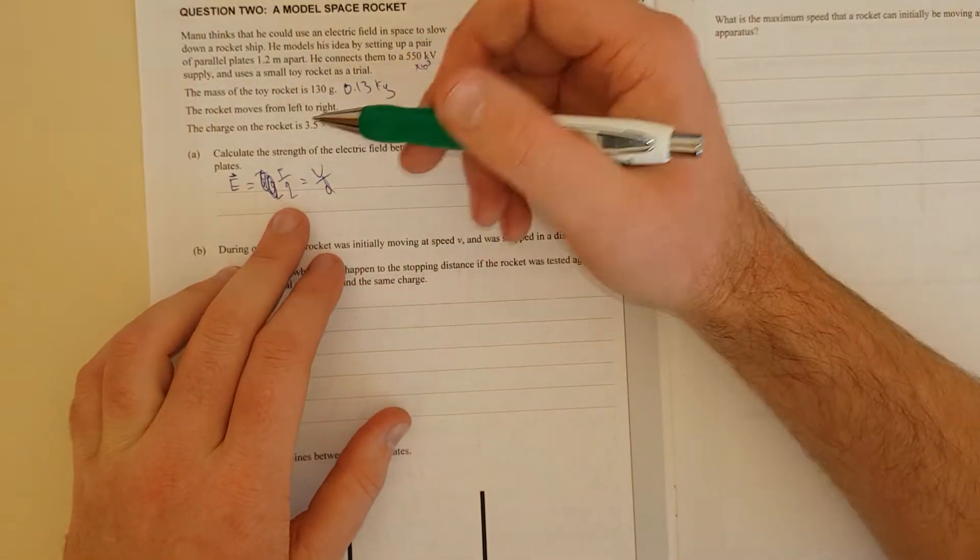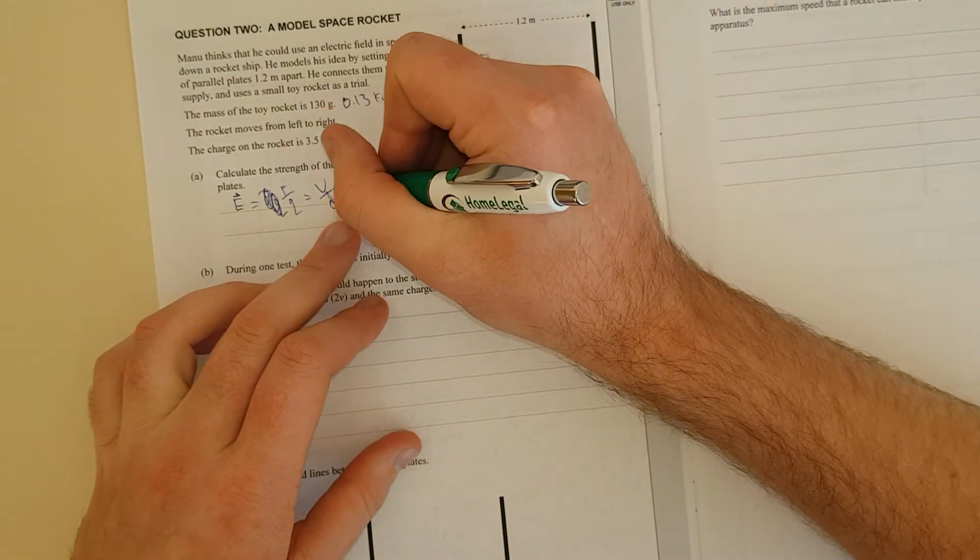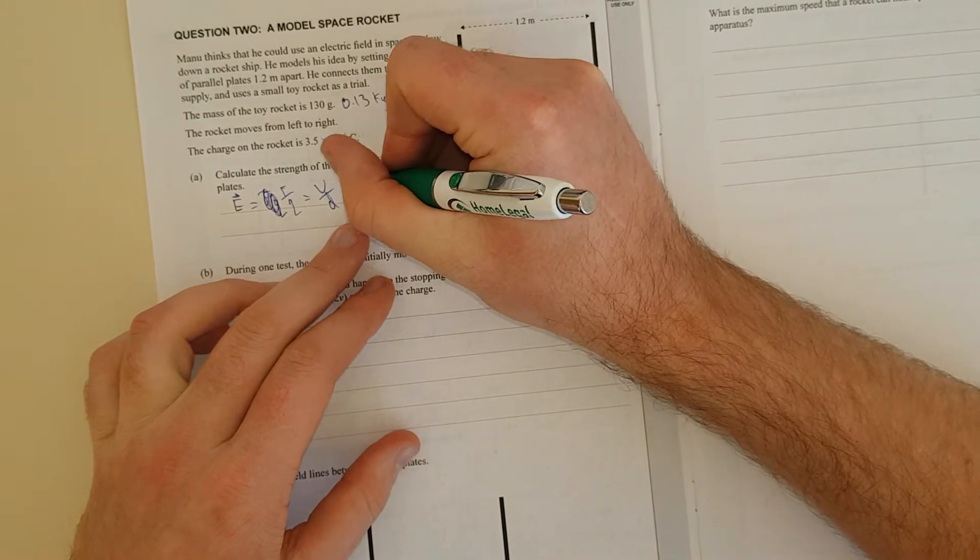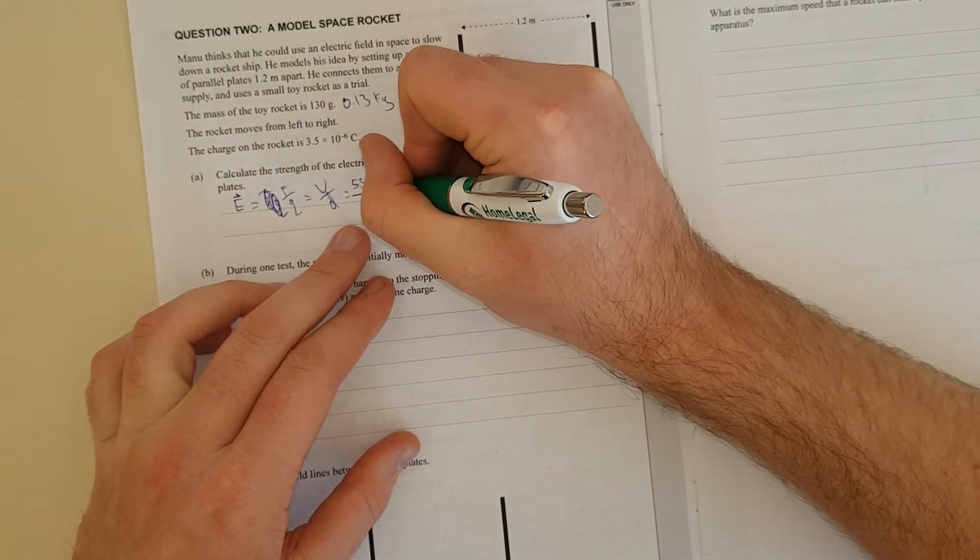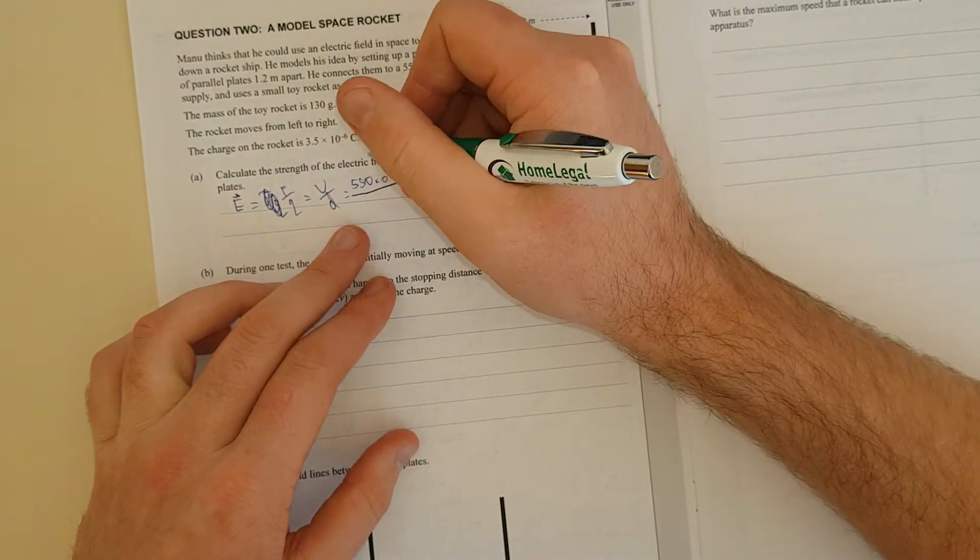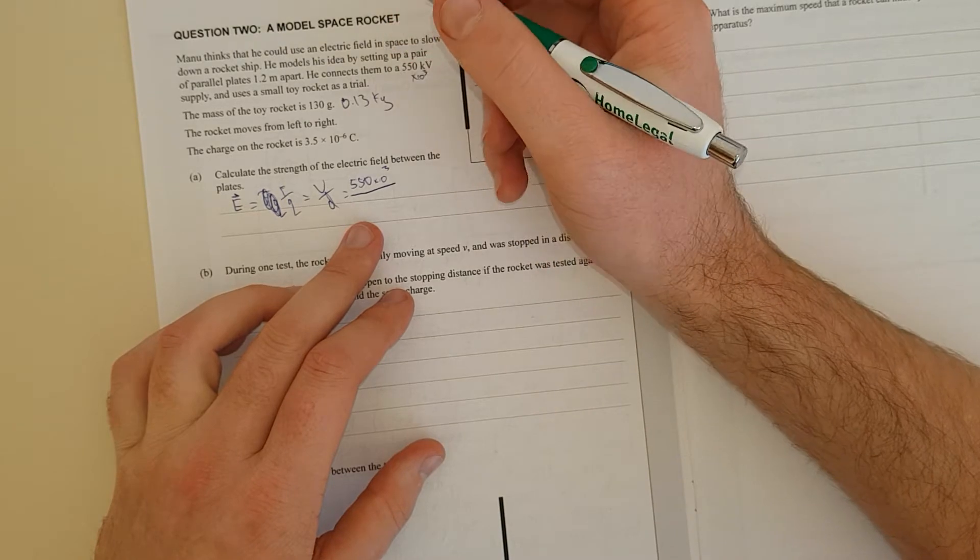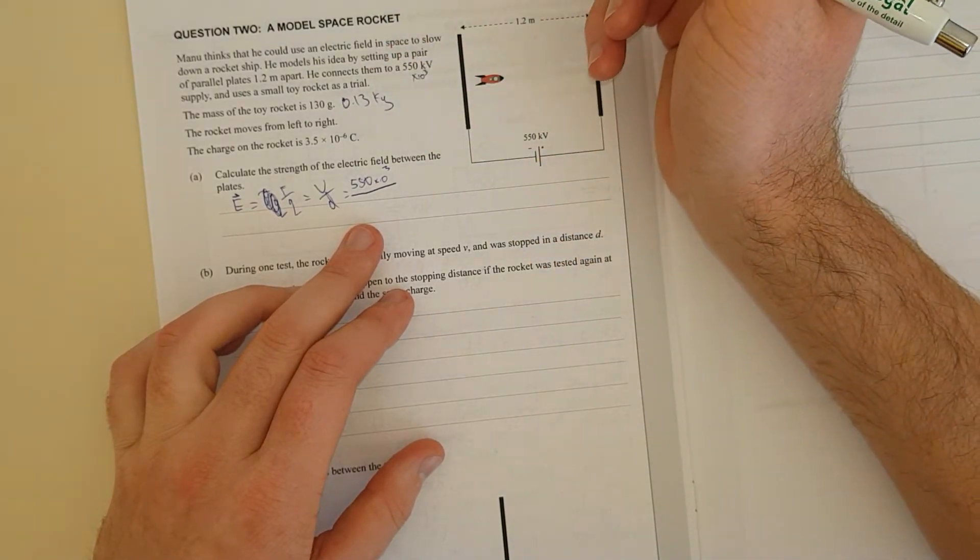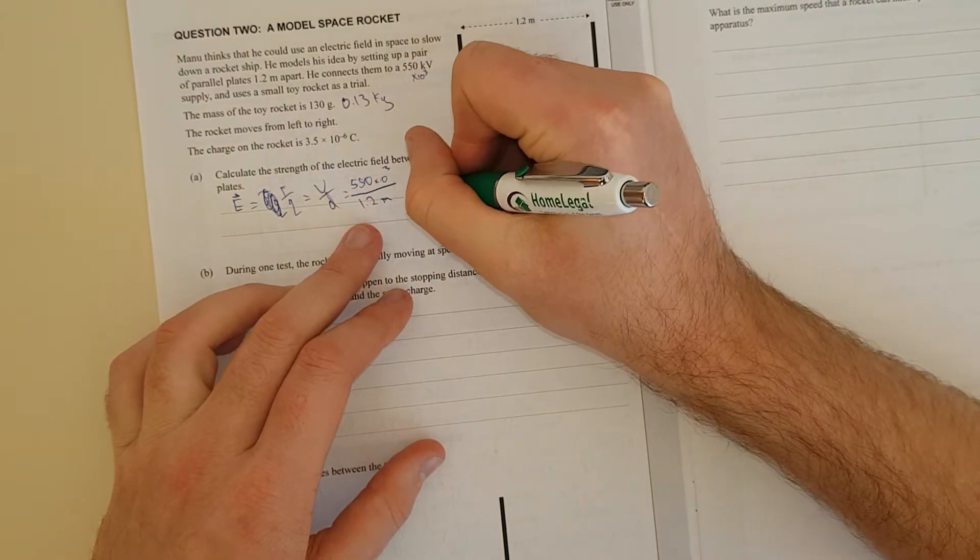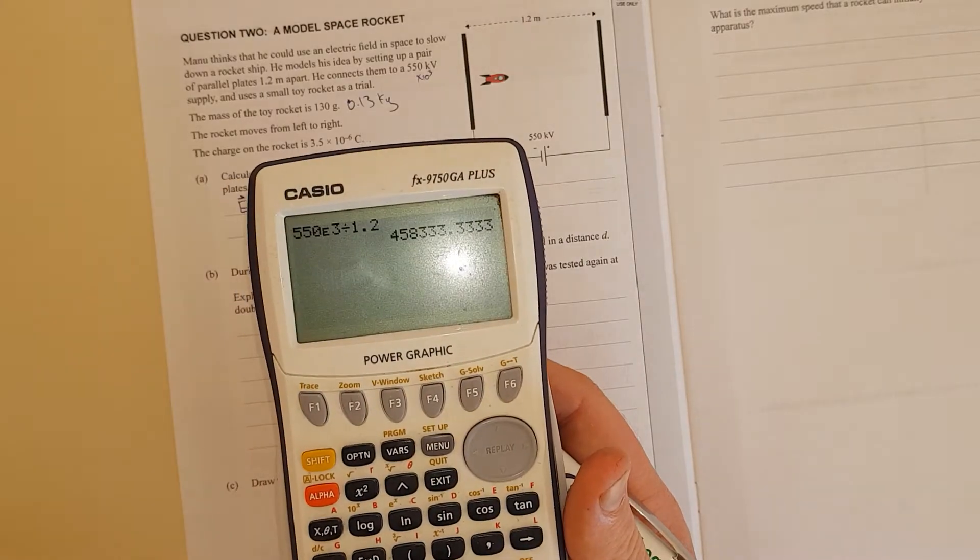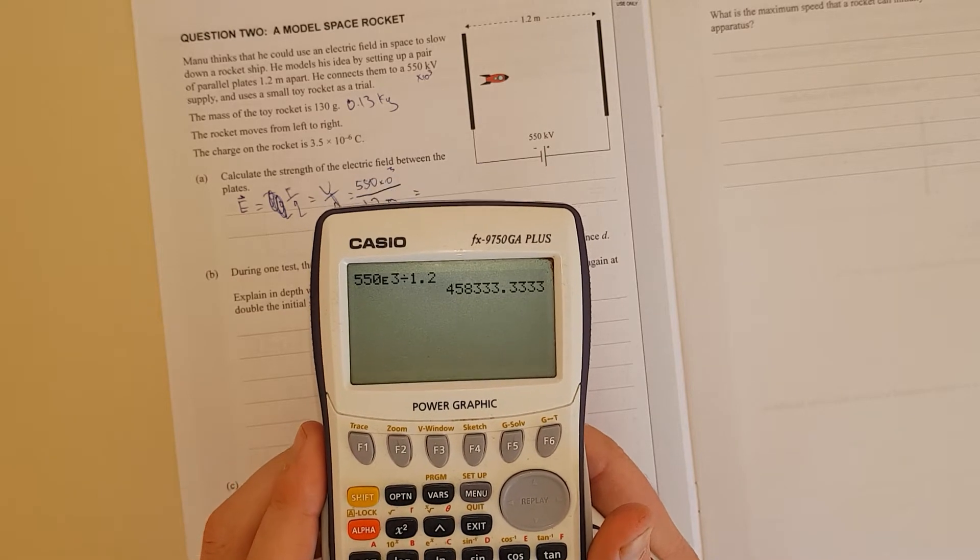Right, I don't have any forces in there. I do have a charge. But what I do have is I have a voltage and a distance. So it's just going to be 550 times 10 to the 3 divided by, because this is kilovolts. So it's 550,000. Divided by the separation distance which is 1.2 meters.